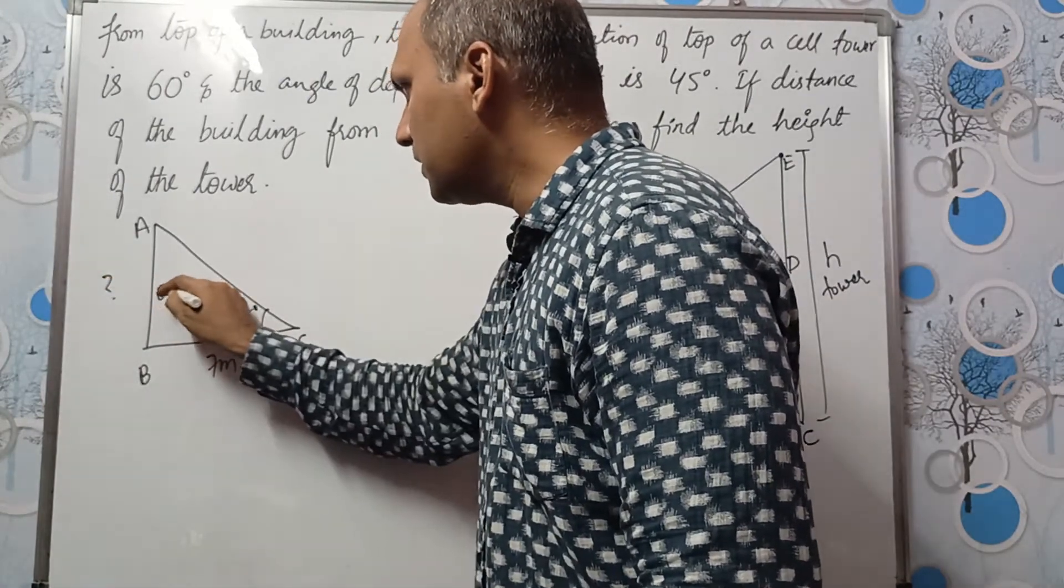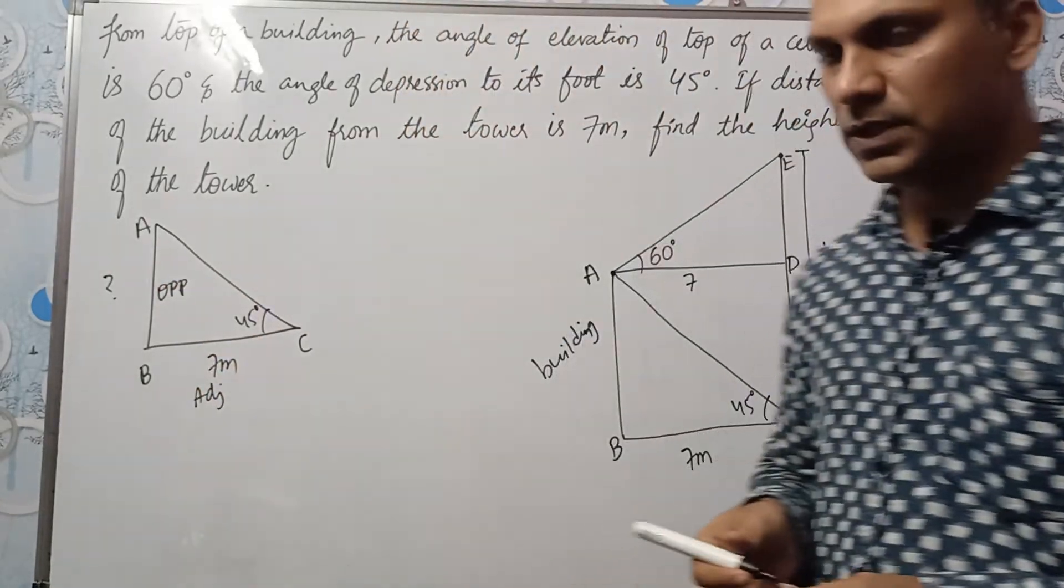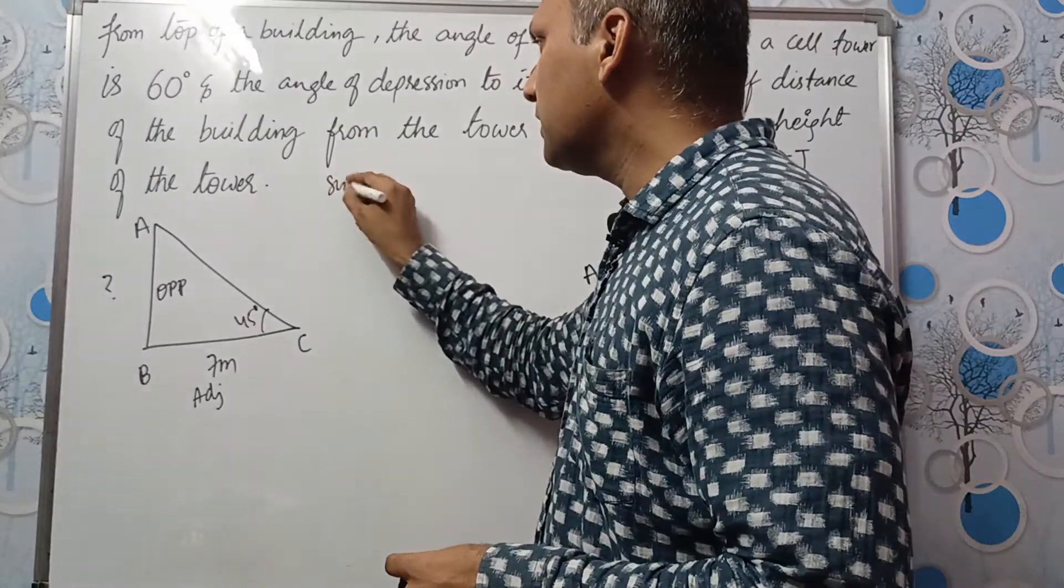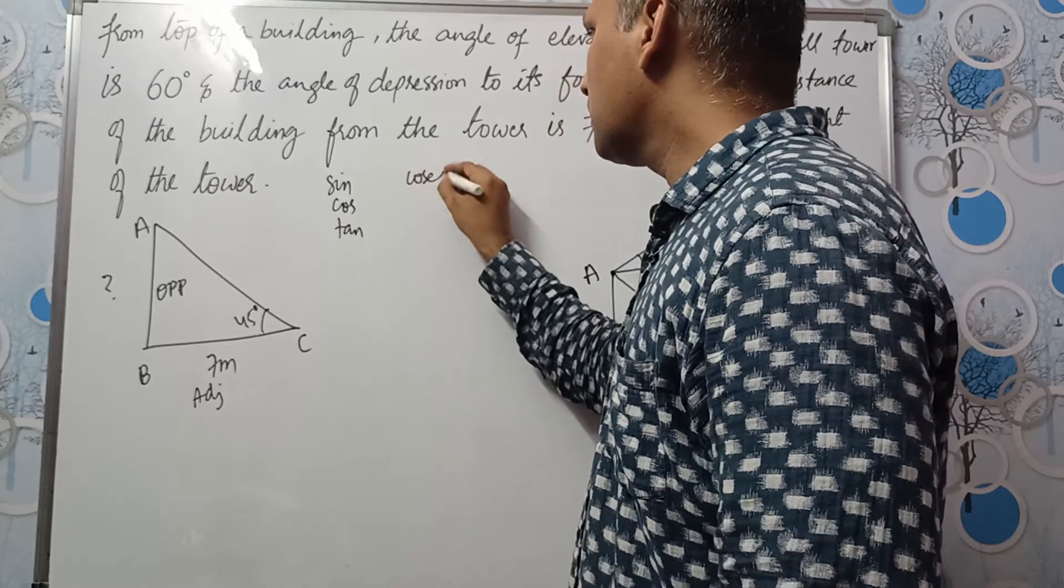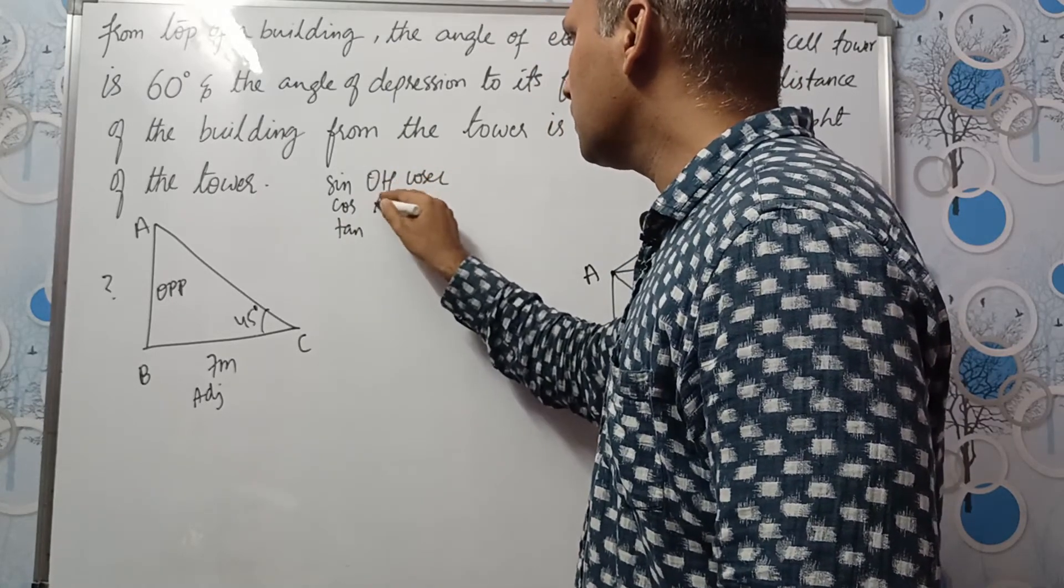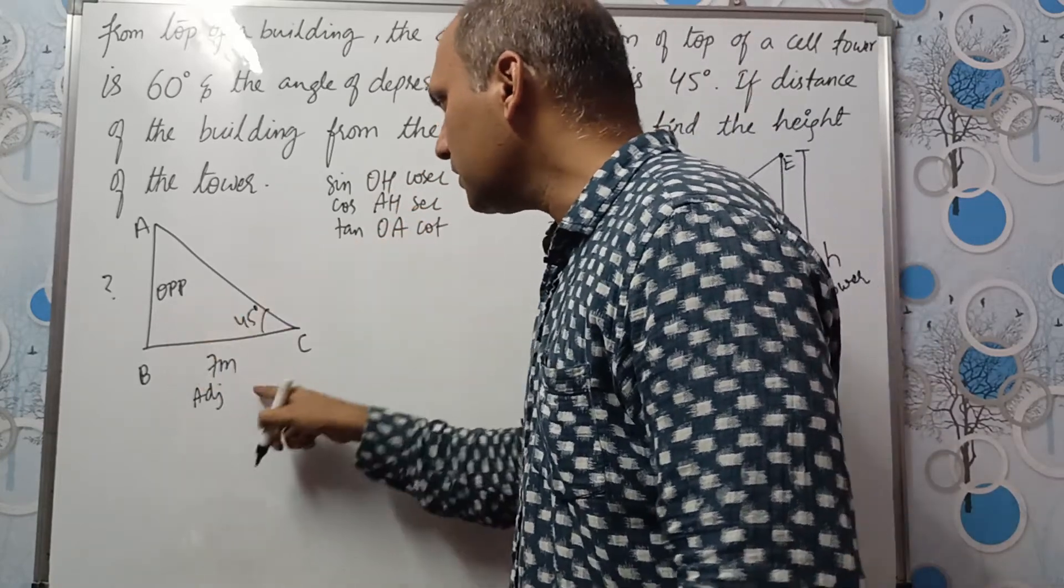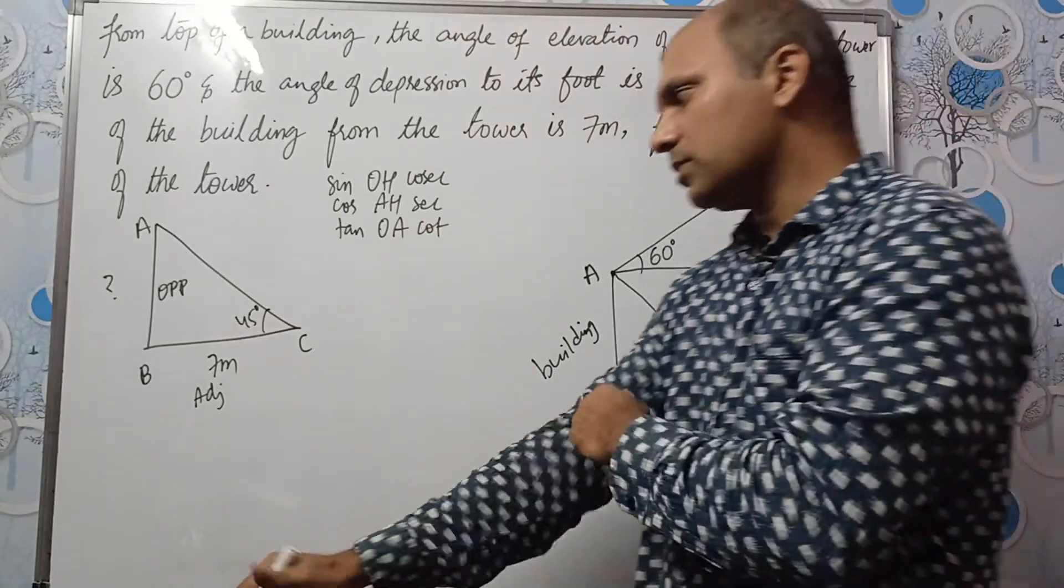45 is here. So this one will be the opposite side. This one will be the adjacent side. Opposite and adjacent will come in tan formula. As well as in cot. So we can either use tan or cot. We will use tan now.